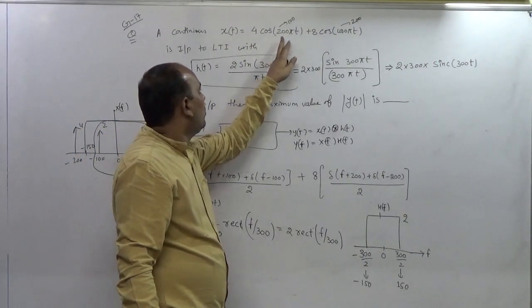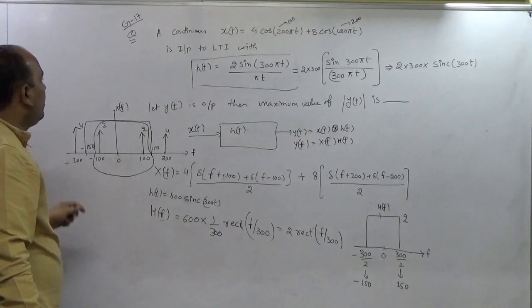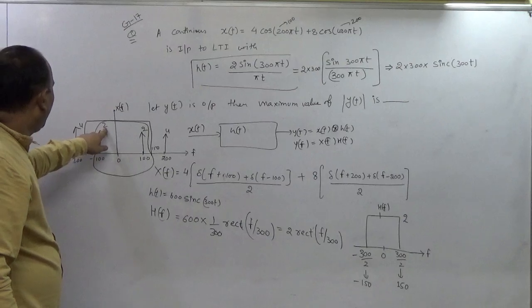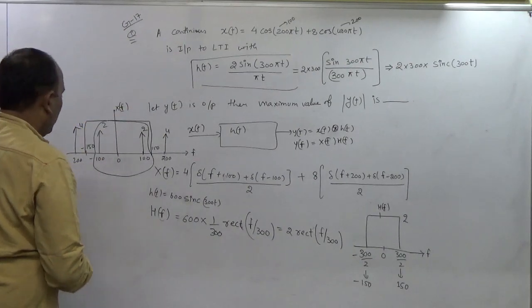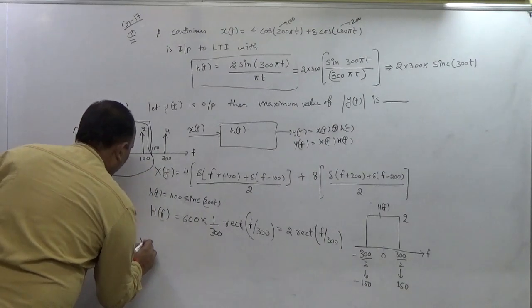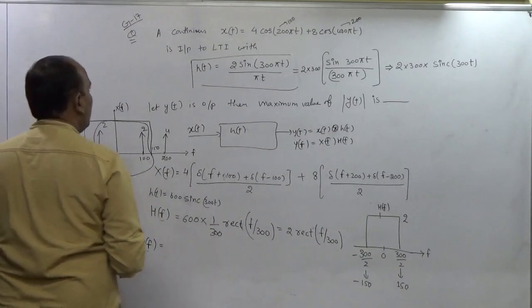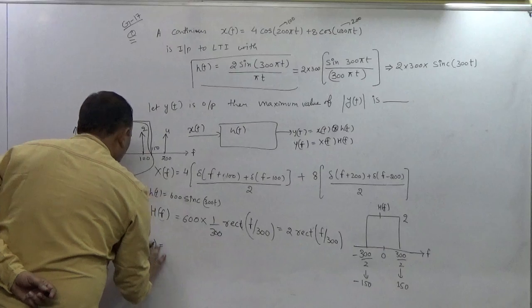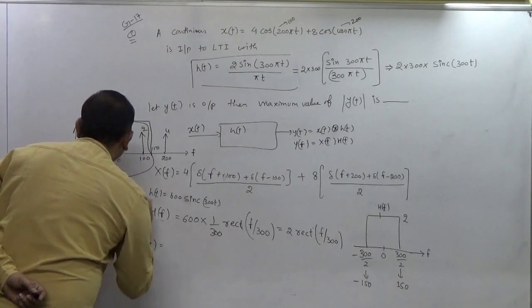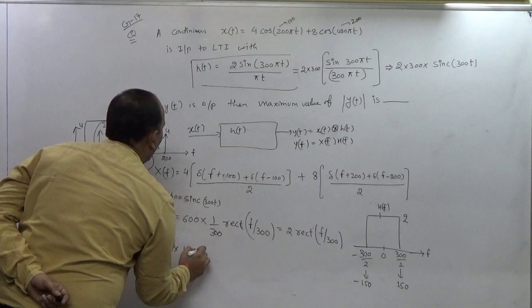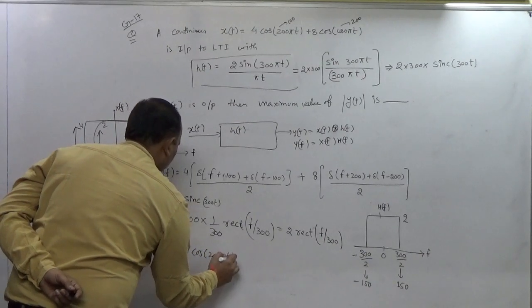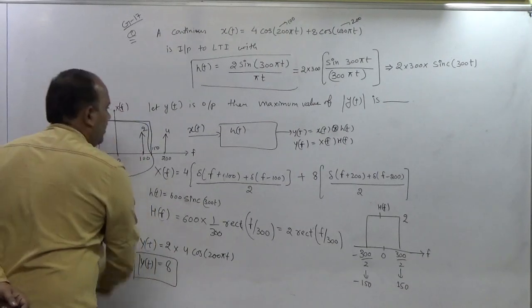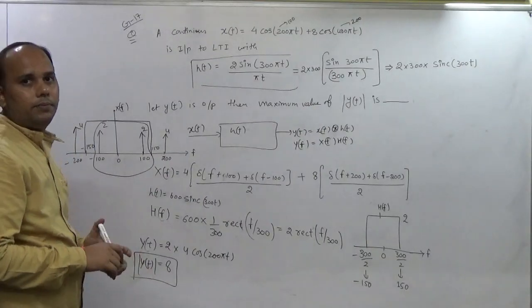That is y(t) equals 4cos(200πt). It is just passing 4cos(2π×100×t). So this is 2 and this one is 4, so the final answer, your answer is 8. For this question the answer is 8.